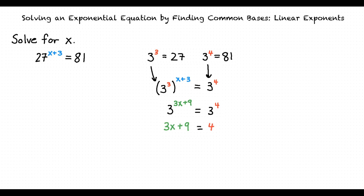Doing this, we will have 3x plus 9 equal to 4. Solving for x, we will find that x equals negative 5 over 3.